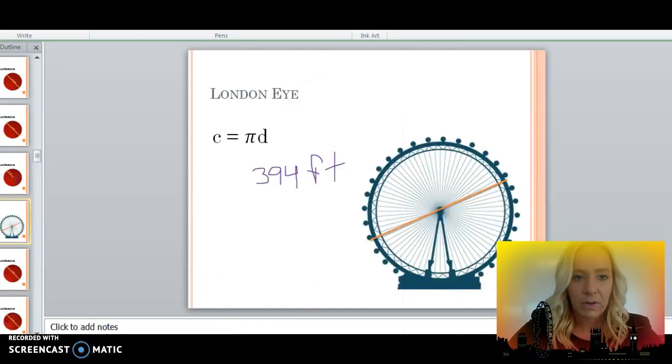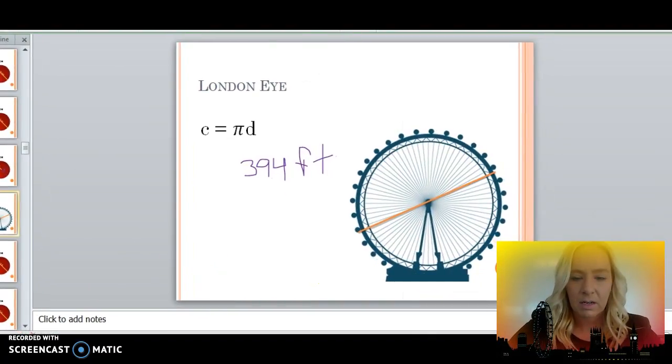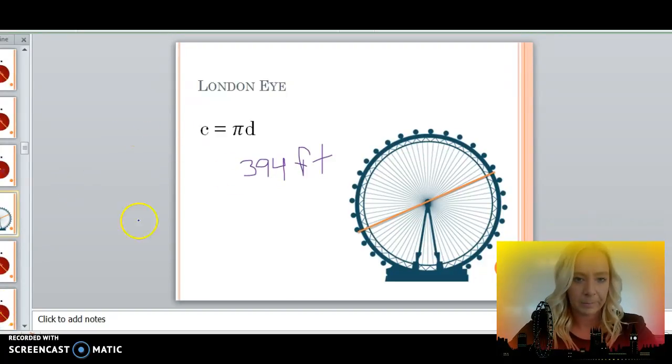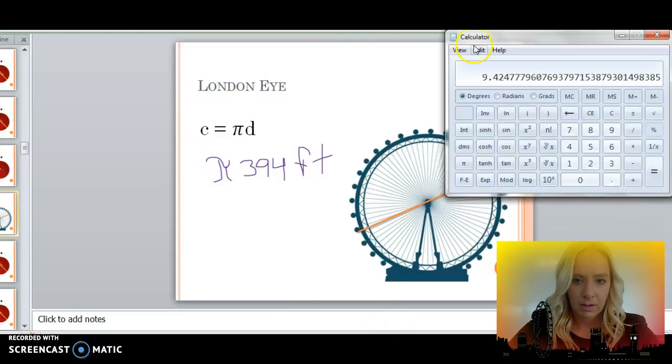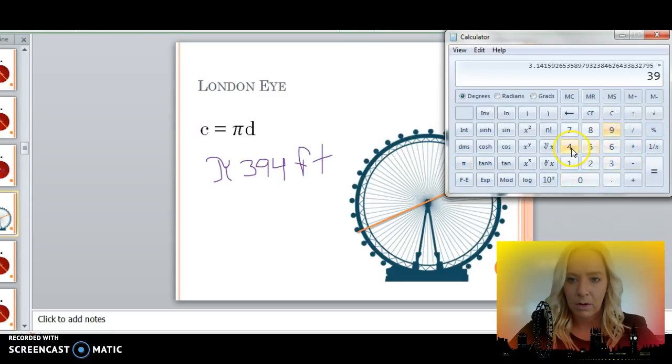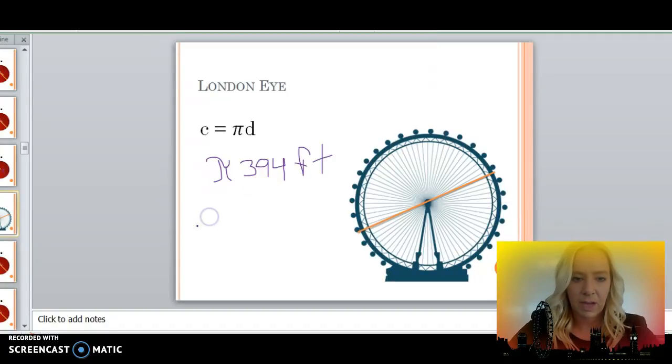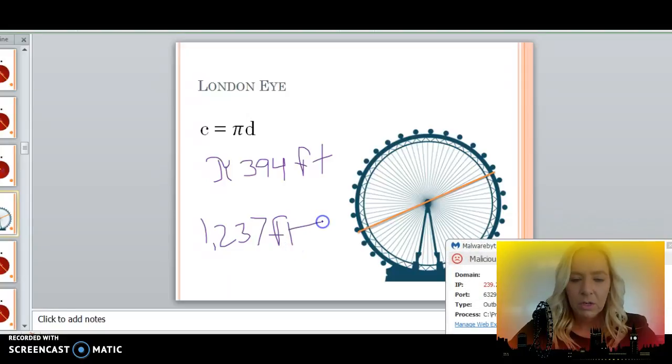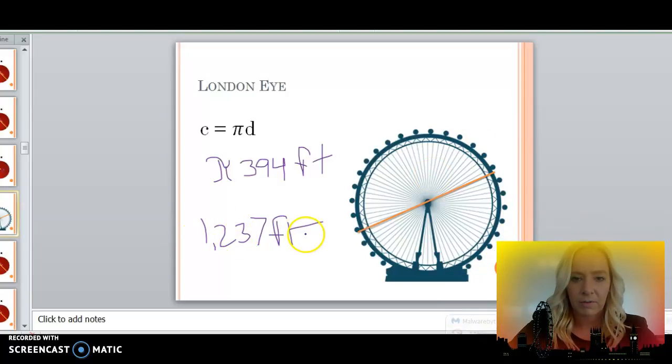The London Eye is 394 feet across. What we're going to do is calculate the circumference, or distance, around the London Eye. Let's take pi times 394, which equals 1,237 feet of circumference. That means the distance all the way around the London Eye is 1,237 feet.